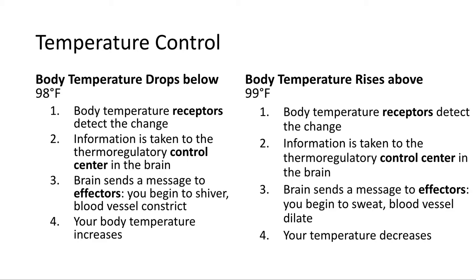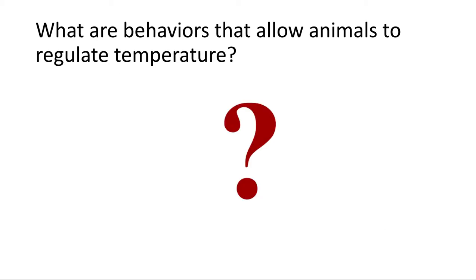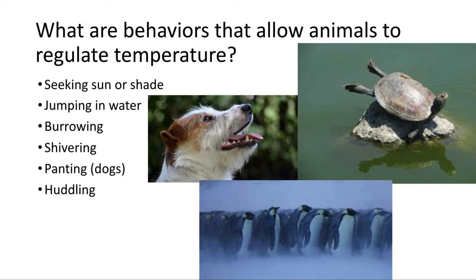How do animals regulate their body temperature to maintain homeostasis? Some things animals do include seeking out sun or shade. Turtles sun themselves on rocks, and when their body temperature gets too hot, they drop into the water. Some animals engage in burrowing and shivering behaviors. Dogs cool off by panting, and emperor penguins huddle together for warmth.